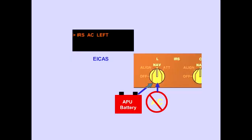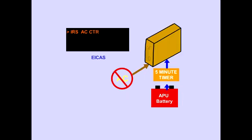The EICAS advisory message, IRS AC, indicates the IRS has lost its primary AC power source and has automatically transferred to DC power. The DC power will come from the APU battery, and the IRS will continue to supply position information. With a loss of AC power, the center IRS will operate on the APU battery for only 5 minutes. It then shuts down.